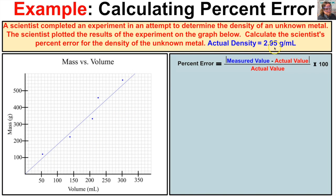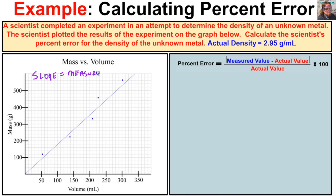We know the actual density is 2.95 grams per milliliter, and what we have to do is determine the scientist's percent error. The line of best fit for these plotted points will end up being the measured density of this unknown metal. In other words, if we can find the slope of this line of best fit, that will give us the measured density.